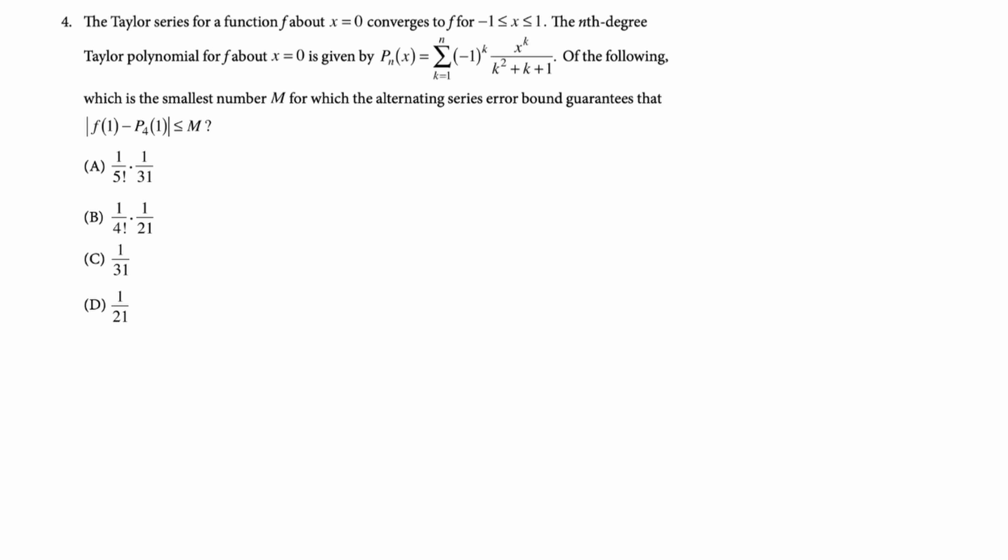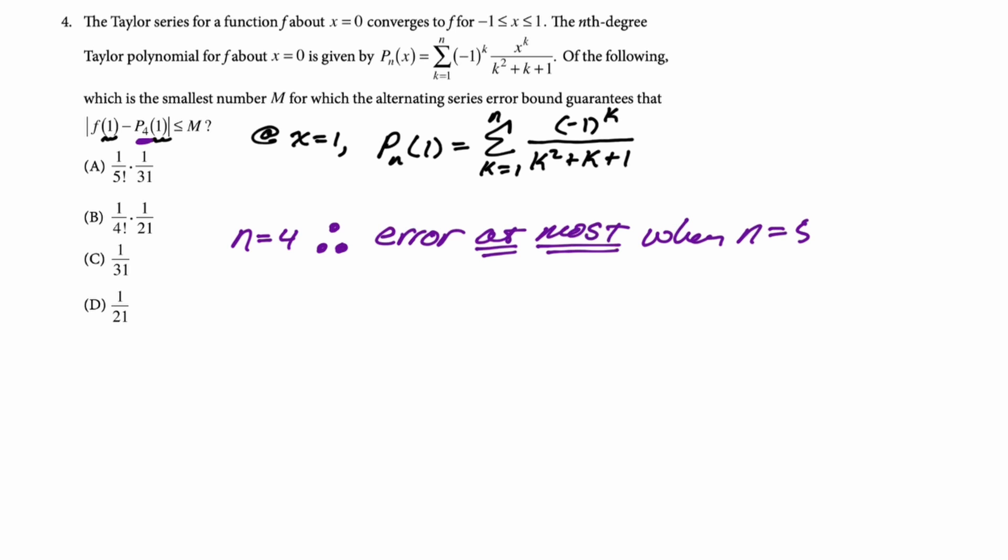So let's see if we can find it. So first up I notice that we're just plugging in one so at x equals one we can rewrite our series to just be every x becomes one but there's only one x so it's just negative one to the k over k squared plus k plus one. Now this is an error question about alternating series so if we're using n equals four that means that the error is going to be at most the first term left which would be when n is equal to five. So I think to solve this problem we just have to plug n equals five into our series above. So if n is equal to five what do we get? What's that term? So when n is five we get negative one to the fifth over five squared plus five plus one. We actually need the absolute value of this because it's error and then if we just evaluate this we get one over 31.